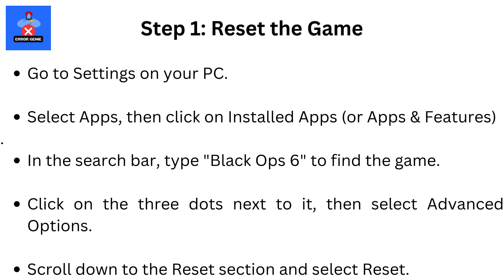Step 1: Reset the game. Go to Settings on your PC, select Apps, then click on Installed Apps or Apps and Features. In the search bar, type Black Ops 6 to find the game. Click on the three dots next to it, then select Advanced Options. Scroll down to the Reset section and select Reset. Once it's done, check if the Play or Install button appears in the Xbox app, and try launching the game.